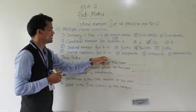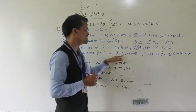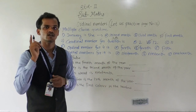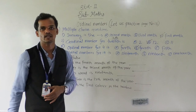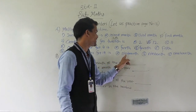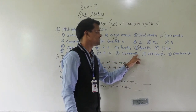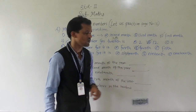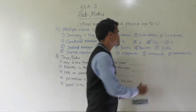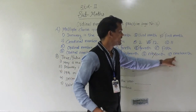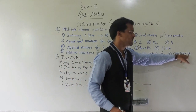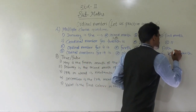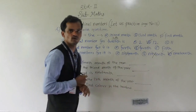Fourth question: ordinal number for 19th. Spellings are given different — which is the correct spelling, you tick mark on that option. N-I-M-T-E-M-T-H — this spelling is wrong. Then N-I-N-E-T-E-E-N-T-H — this spelling is correct. So this is the correct option.